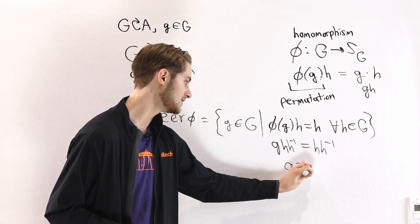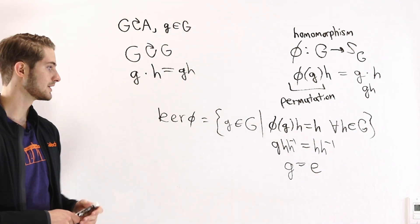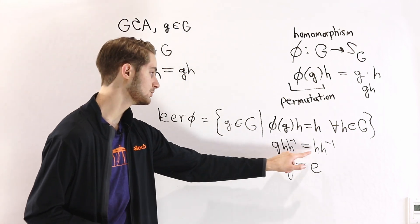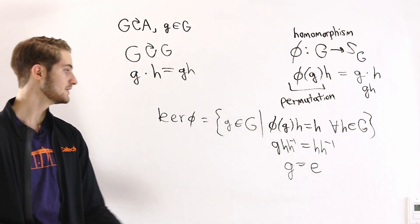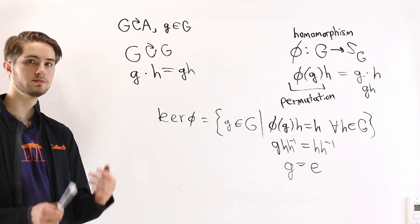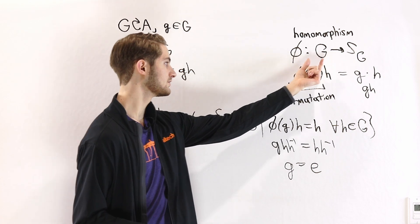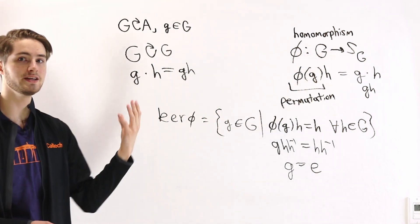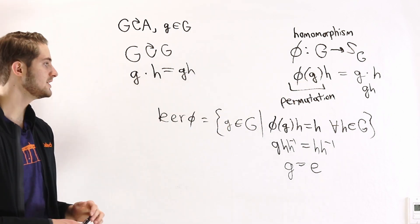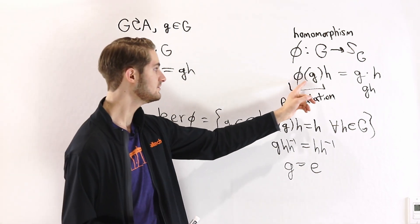If we do that, h·h⁻¹ is the identity, so on the left we just get g and on the right h·h⁻¹ again gives us the identity element. So the only way we can have gh = h in a group is if g is the identity. Remember the kernel of φ is the set of elements such that φ(g) is the identity permutation, but for φ(g) to be the identity permutation it has to not permute anything, meaning φ(g)(h) must equal h.